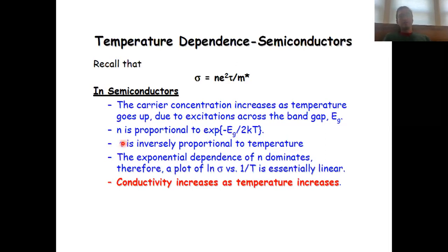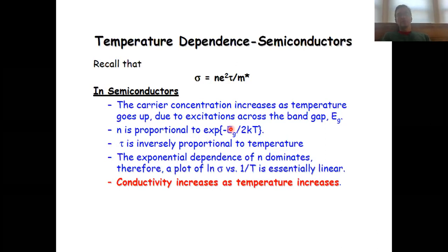Tau is still inversely proportional to the temperature. That means the number of charge carriers, due to that exponential term, is dominating the behavior. As a consequence, the conductivity increases as the temperature increases.